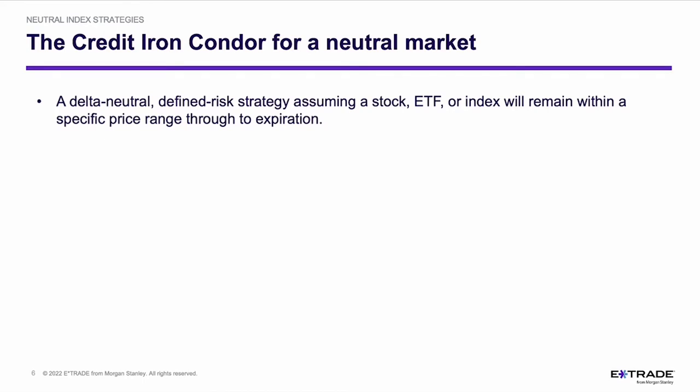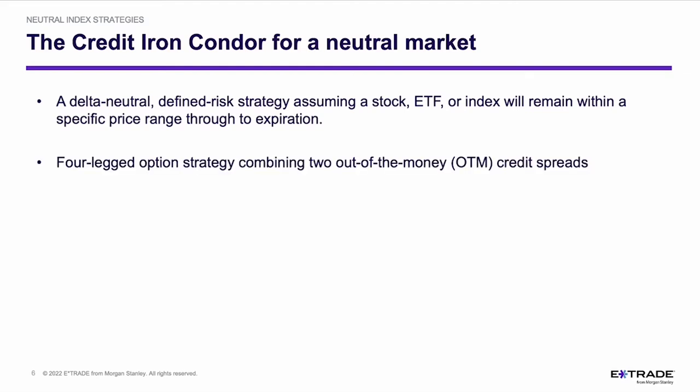That's important not only for peace of mind, but it also permits me to trade something like an iron condor in one of my retirement accounts. Because the losses are definable, I can trade it in a retirement account. It's a defined risk strategy that assumes a stock, an exchange traded fund, or an index is going to remain within a specific price range all the way through to expiration.